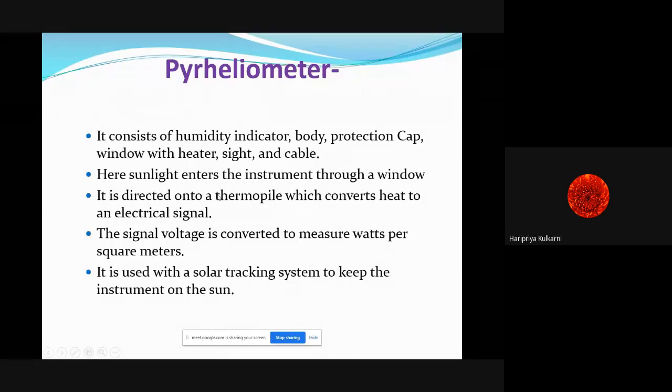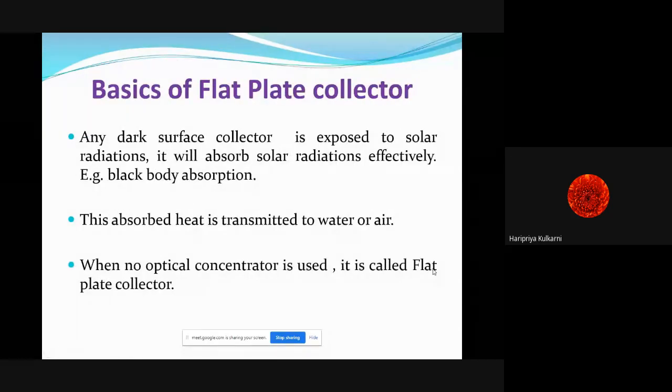Signal voltage is converted to measure watts per square meter, which is the unit of solar radiation. It is used along with a solar tracking system to keep the instrument directly exposed to the sun to measure the direct beam radiation.